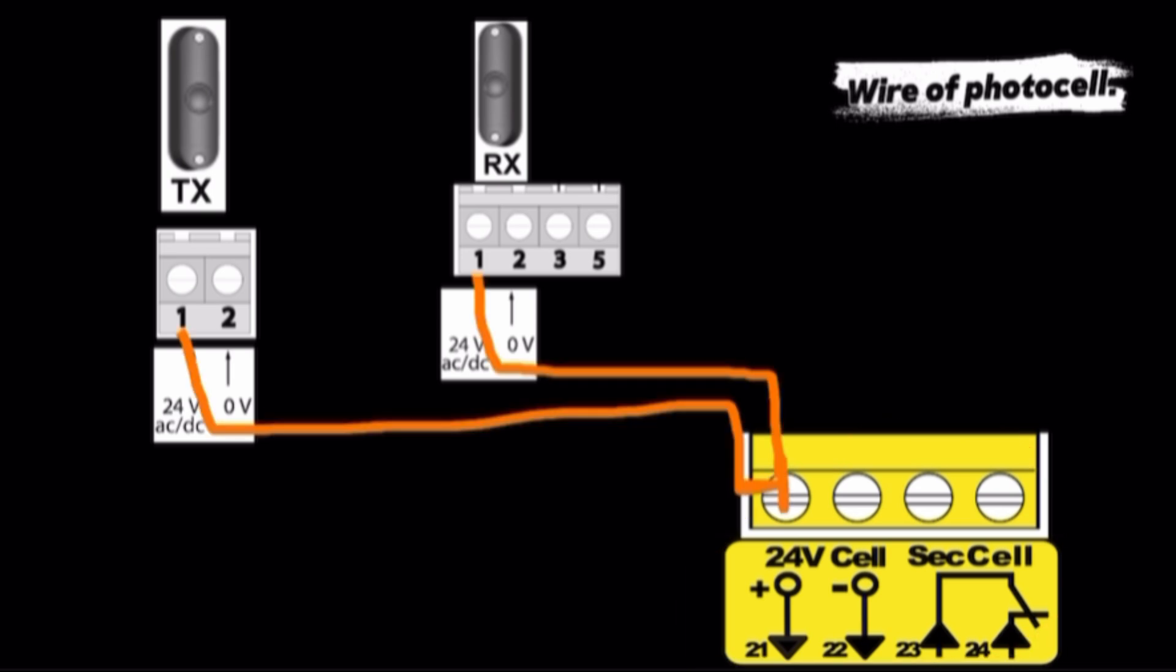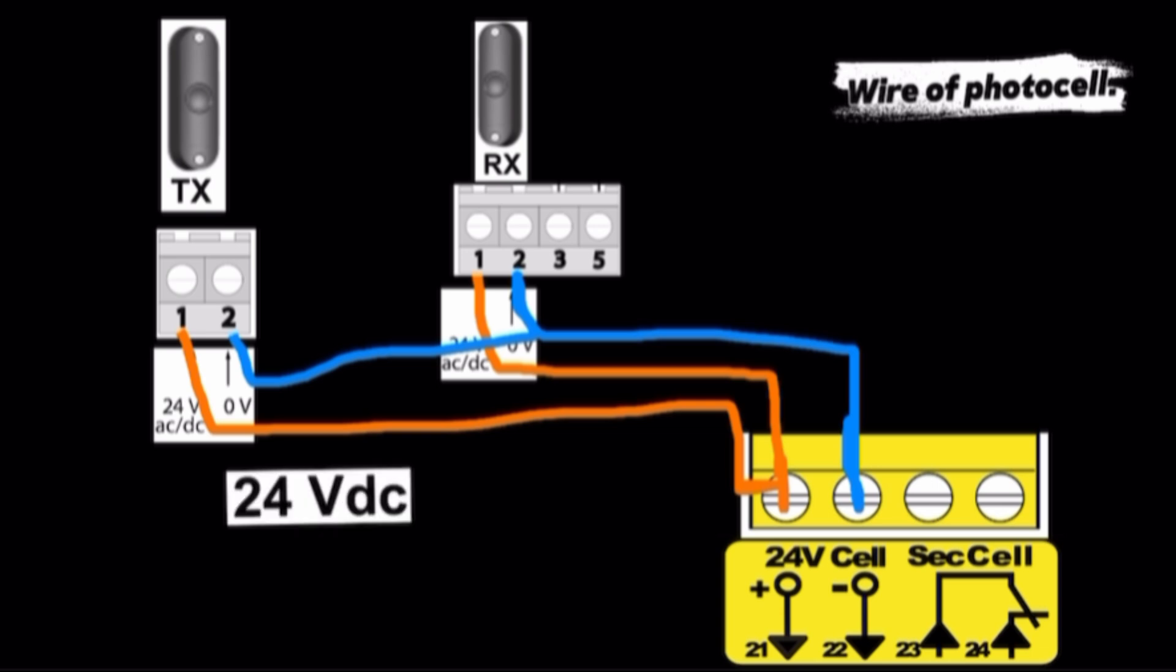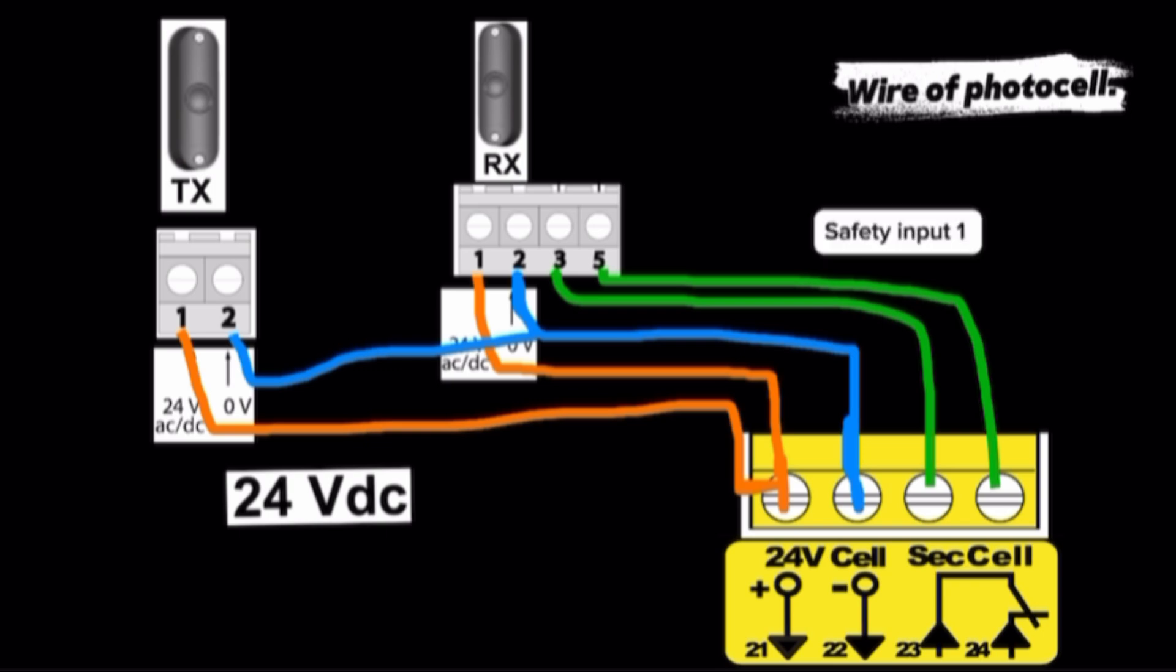Terminal 21 is DC positive power supply. Terminal 22 is DC negative power supply. This output is 24-volt DC safety device power supply, terminals 23 and 24. Safety input 1 is used to connect RX receiver.